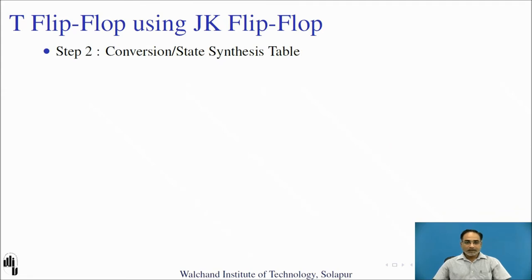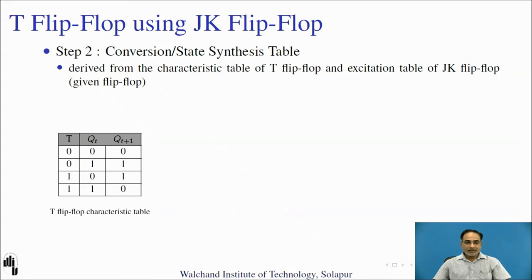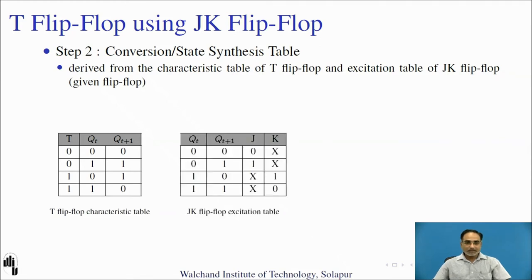For designing, we require a convergent table — you may call it a state synthesis table — to derive the excitation inputs of the given flip-flop. This table is derived from the characteristic table of the T flip-flop and the excitation table of the JK flip-flop. You can pause the video and write down the excitation table of the JK flip-flop, which is required for deriving the convergent table. We are going to combine these two tables.